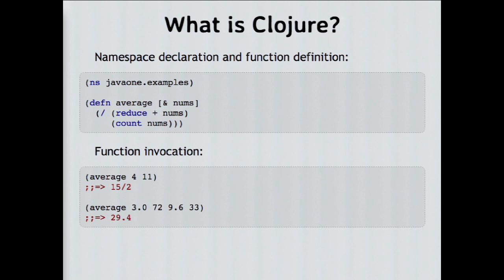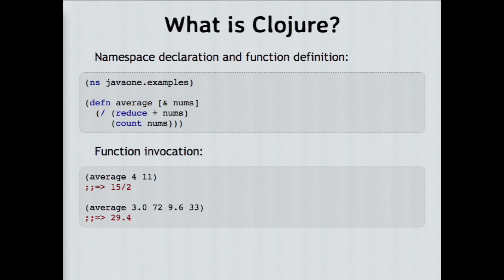You just read expressions from the inside out — they're nested. The innermost expression in this example is reduce plus nums. That's calling a function called reduce, and plus is actually the name of another function being passed as an argument. We're passing the plus function into reduce, which will use it to reduce over the collection of numbers: calling plus on the first two numbers, taking the result, calling plus on that and the next number, and so on, until it gets the sum of all the numbers. Then it divides that by the count — the slash is the division function — so we compute the average.